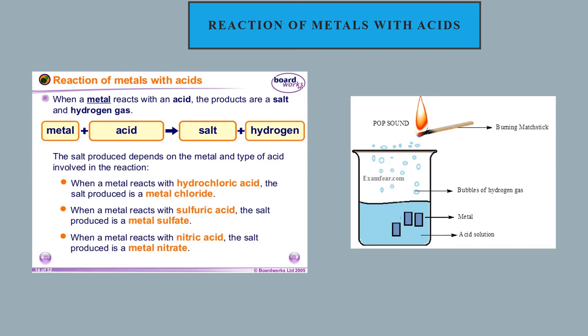Next is the reaction of metals with acids. When metals react with acid, hydrogen gas is evolved and a metal salt is formed — something you have also studied in chapter 1. The hydrogen gas is tested by bringing a burning matchstick near it; the matchstick burns with a pop sound, which is the confirmatory test for hydrogen gas. Metals reacting with hydrochloric acid form metal chloride; with sulfuric acid they form metal sulfate; with nitric acid they form metal nitrate.